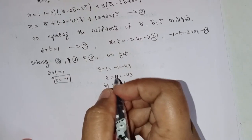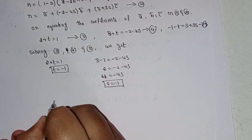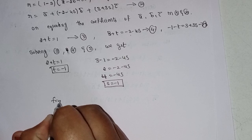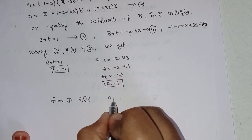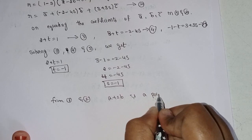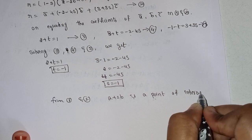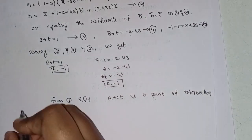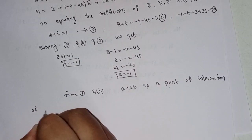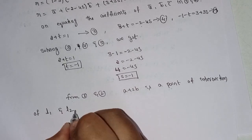From equations 1 and 2, a plus 2b is the point of intersection of L1 and L2.